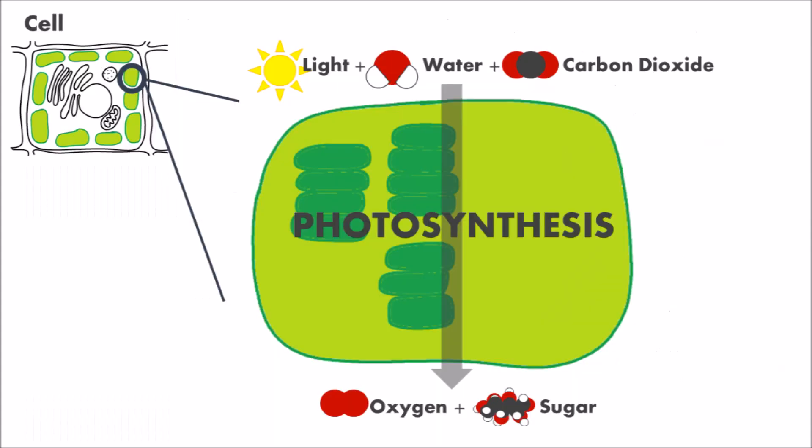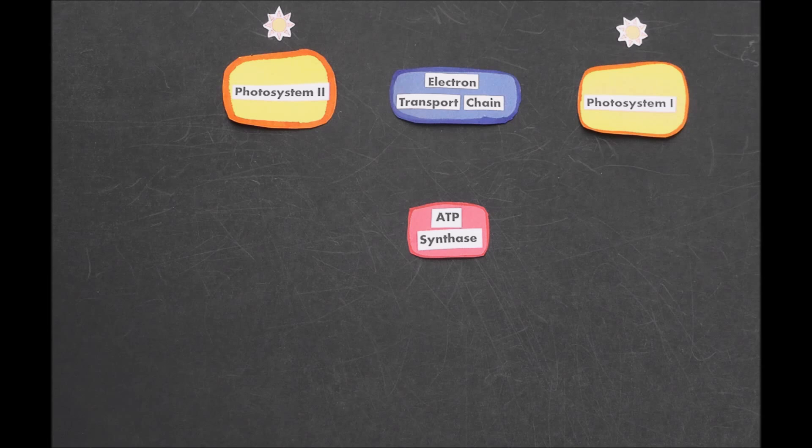Now, you probably already know that the chloroplast is a site of photosynthesis, but we need to dig in a little deeper. Let's visualize what's happening during photosynthesis in a healthy chloroplast. Here we have the major components involved in photosynthesis.